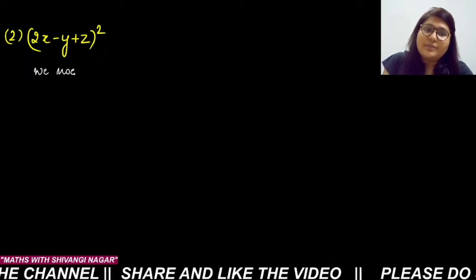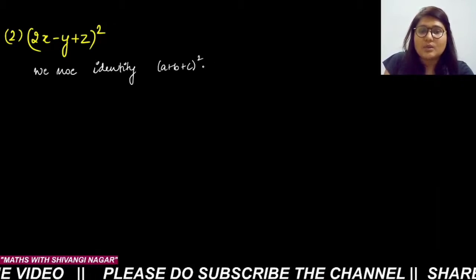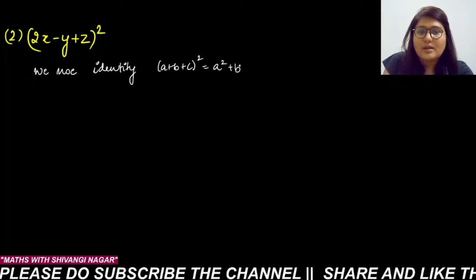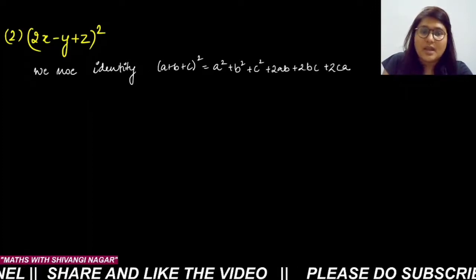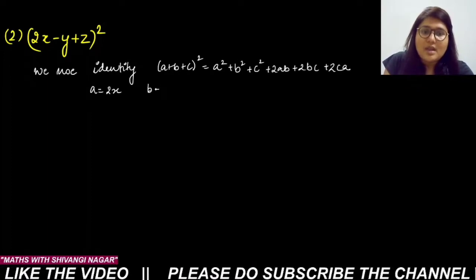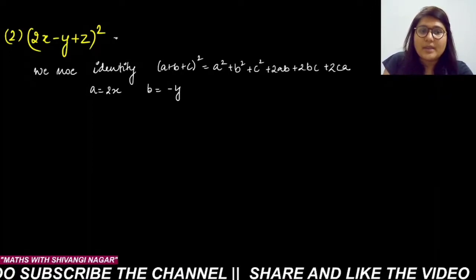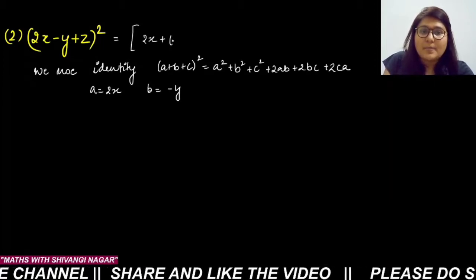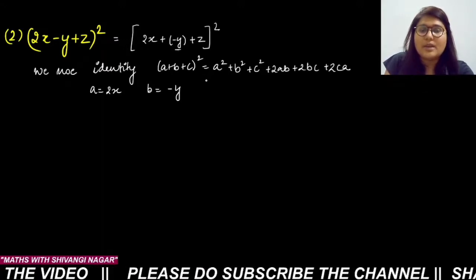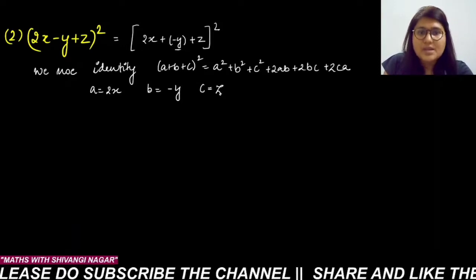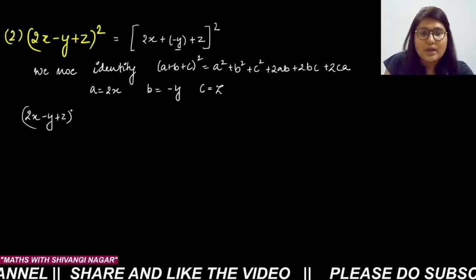Next, we again use the identity (a + b + c)² = a² + b² + c² + 2ab + 2bc + 2ca. Comparing with (2x - y + z)², we get a = 2x, b = -y, c = z. We can write it as (2x + (-y) + z)².